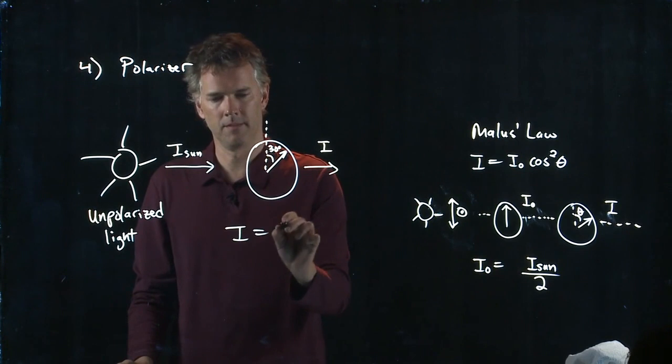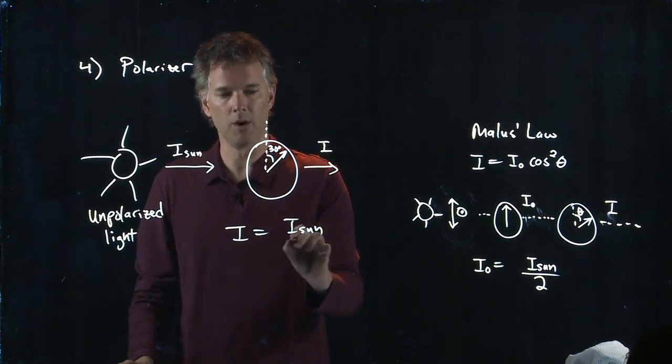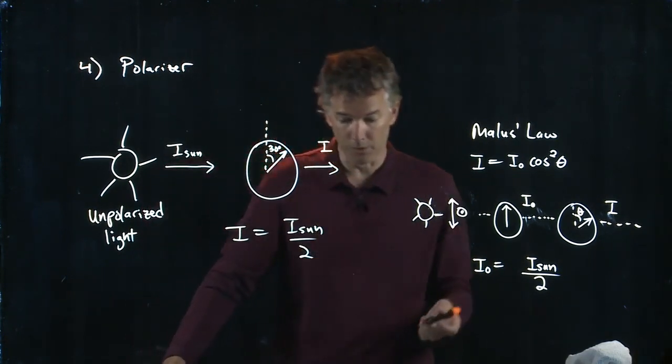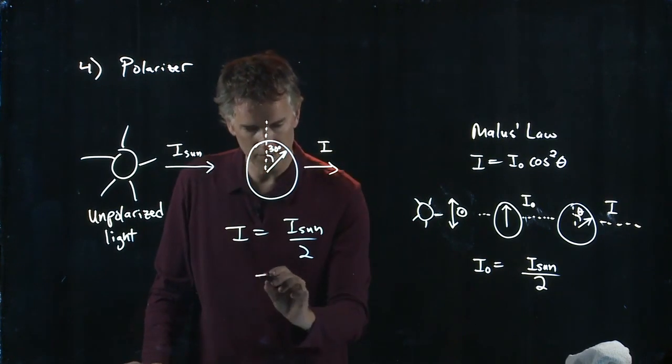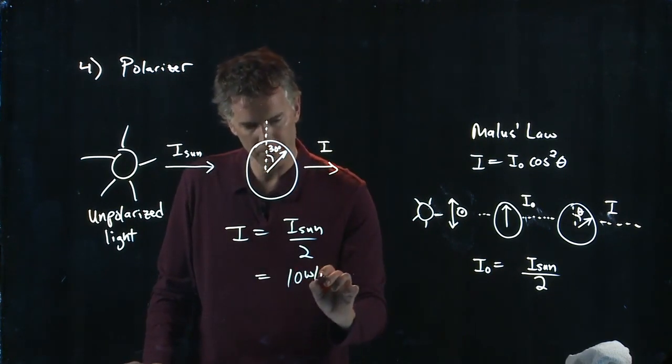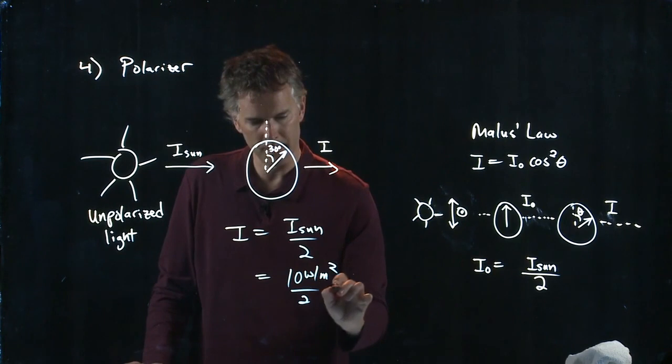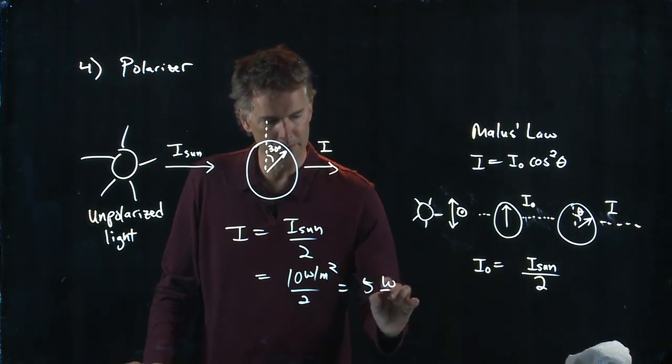So what's the intensity? It's I sun over 2. And they told us what I sun was. It was 10 watts per square meter. So we're just going to divide that by 2, and we get 5 watts per square meter.